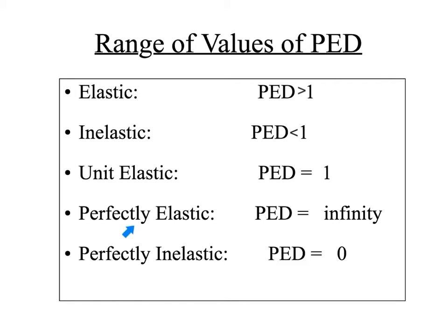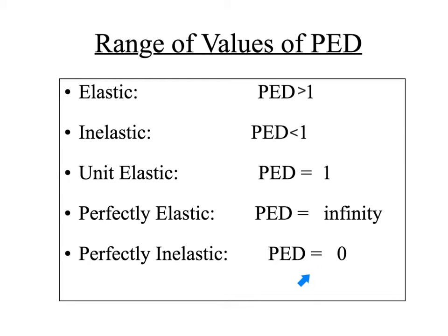If we end up with a situation where it's perfectly elastic — we'll take a look at the graph — this is a perfectly horizontal demand curve. We would say that price elasticity of demand equals infinity. And perfectly inelastic is the opposite of that, which is where price elasticity of demand equals zero, which is a perfectly vertical demand curve.